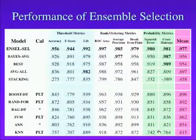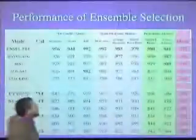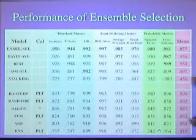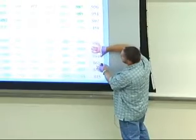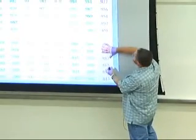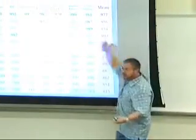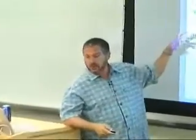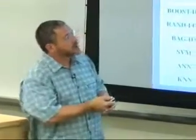Ensemble selection is added to the top of the table. The increment from best single model to ensemble selection is yet another large jump — even beyond the already large jump from best family to best single model. The ensemble selection performance is really phenomenal — beyond state-of-the-art for simple machine learning on these problems.